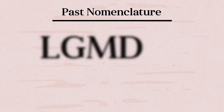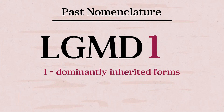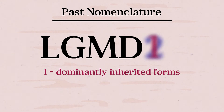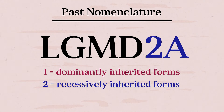In the past, the nomenclature for the limb-girdle muscular dystrophies included the letters LGMD followed by the number 1 for dominantly inherited forms and LGMD followed by the number 2 for recessively inherited forms, then a letter delineating the order in which the chromosomal locus was discovered.